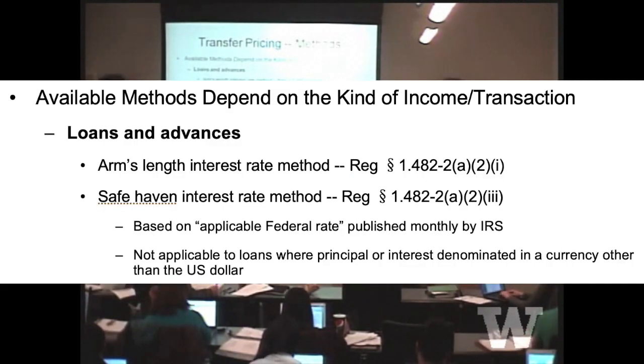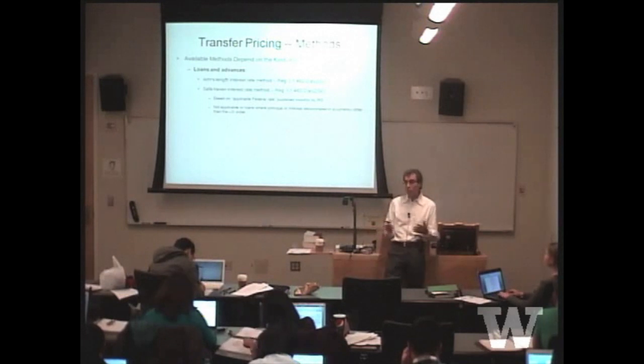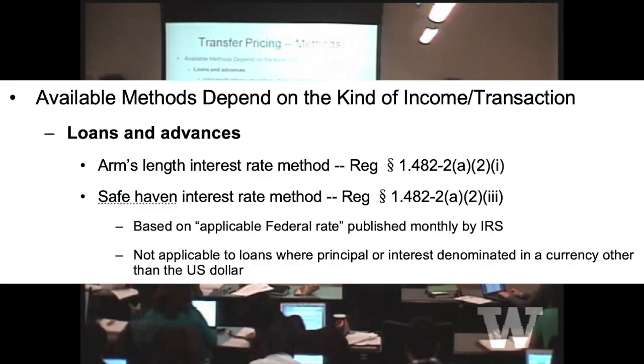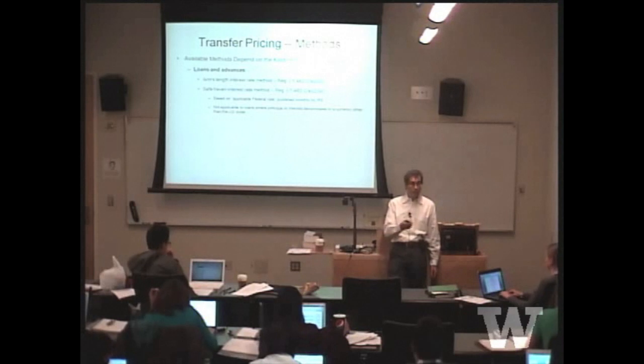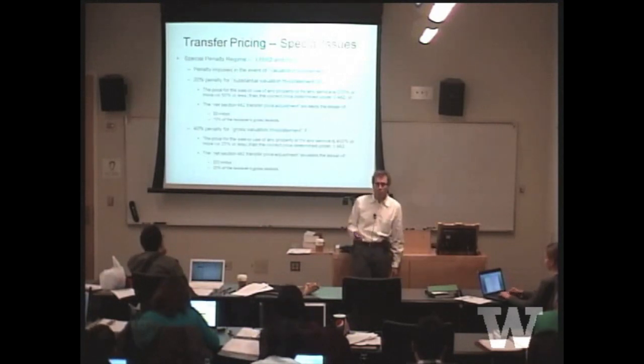Loans and advances, there are a couple of methods. One, which is arm's length, determine what unrelated lenders and borrowers under the same conditions would charge in terms of interest. As an alternative, if you're talking about U.S. dollar loans or advances, there's specifically an applicable federal rate safe haven methodology. And every month the IRS publishes in a revenue ruling the short-term, mid-term, long-term rates, AFR rates for these types of transactions. Before we go on to the next section, any questions about the pricing methods as opposed to other aspects? Yes, Jessica?